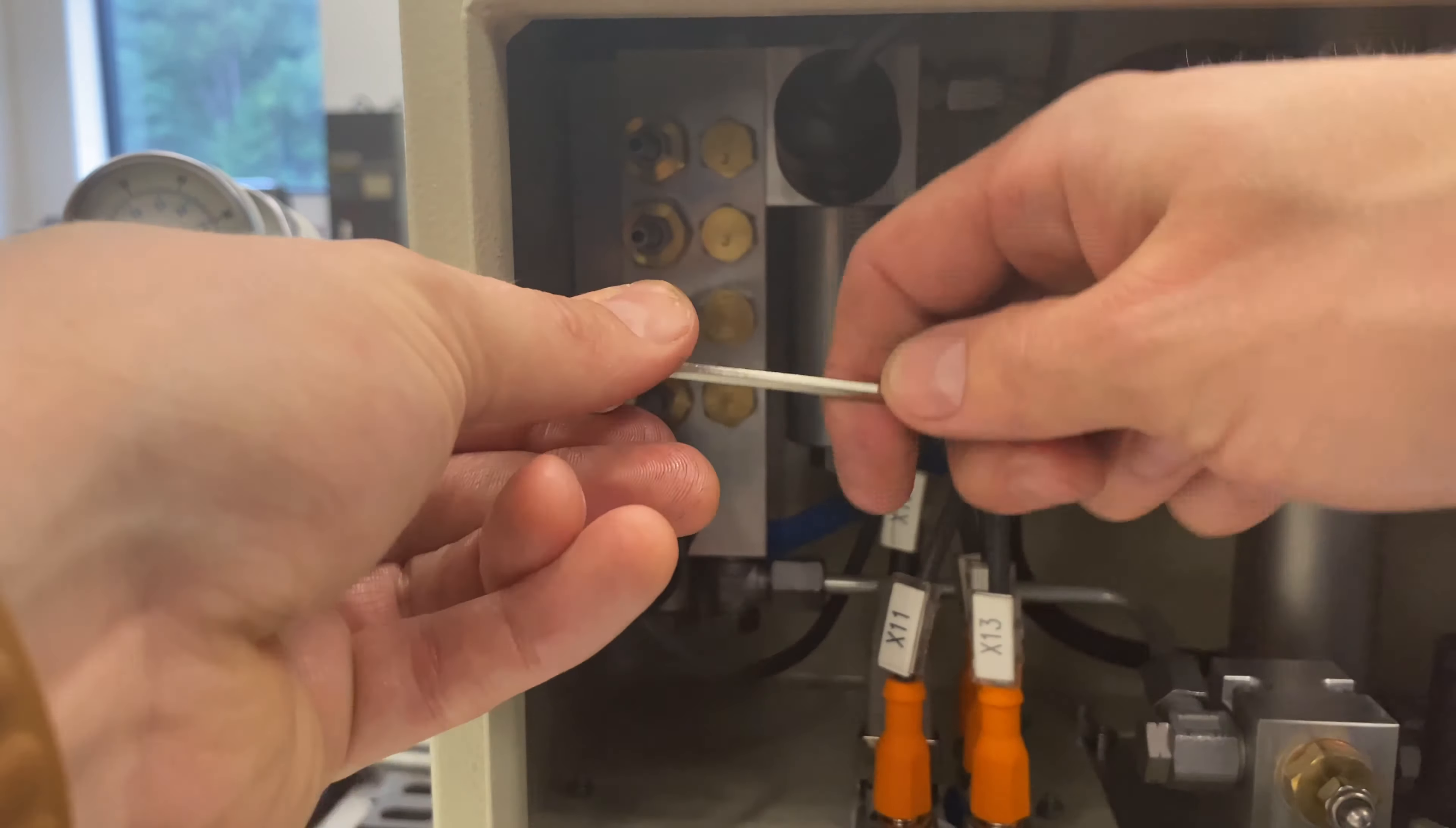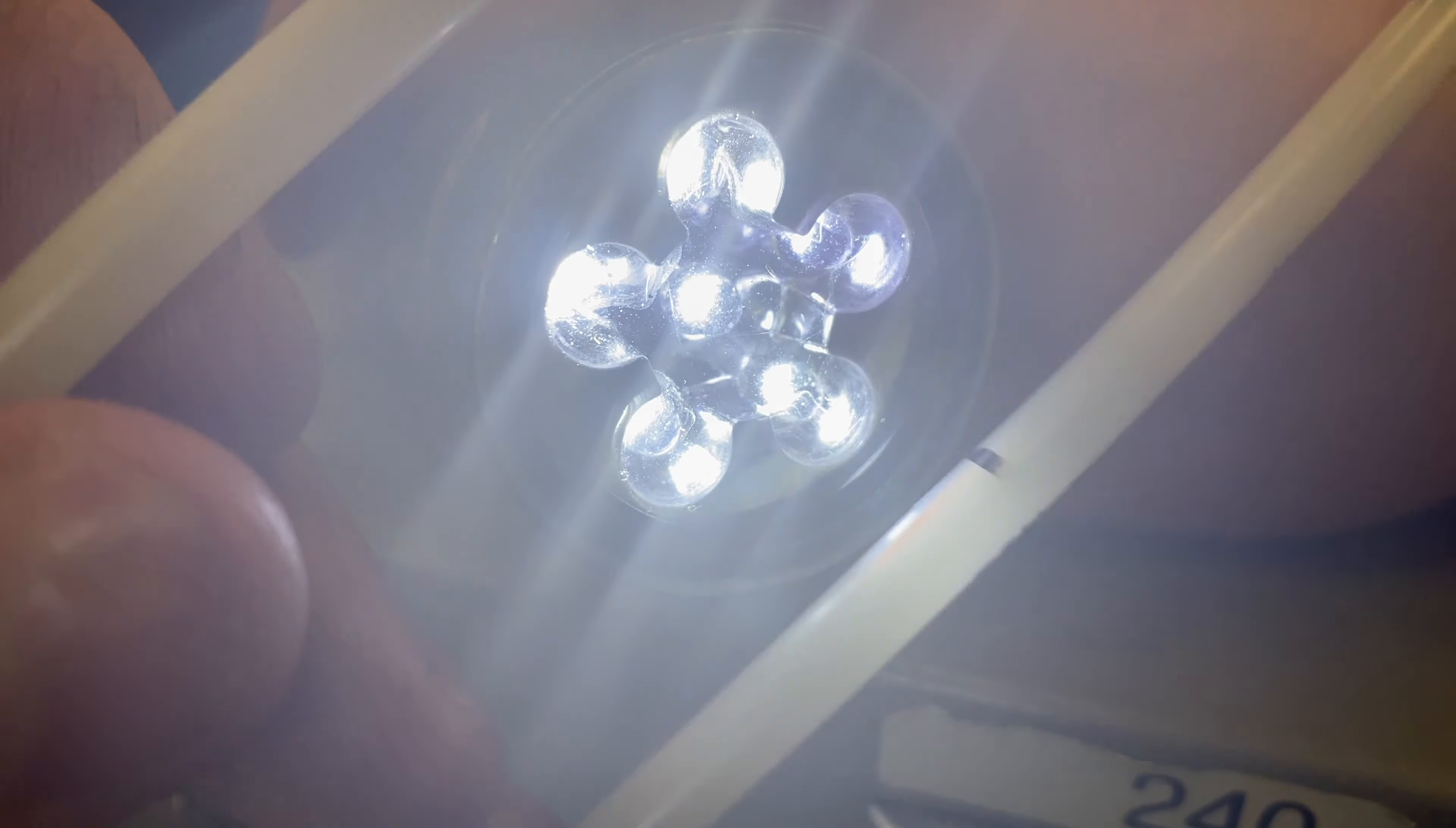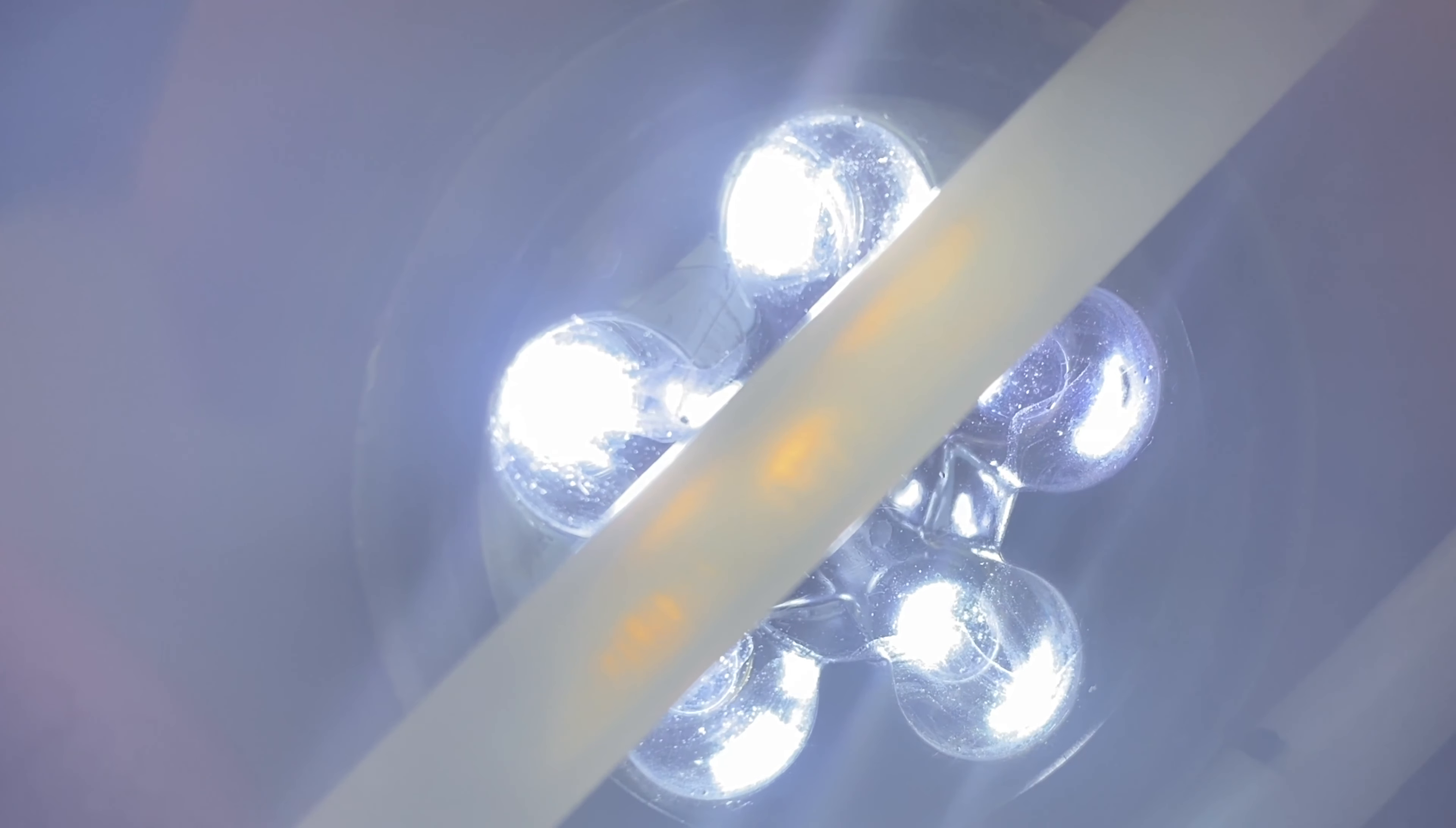Let the spindle run in pre-lube mode. Once that's done, take a flashlight and look through the lines. You should see marching soldiers going towards the spindle. This is the oil traveling to the spindle.